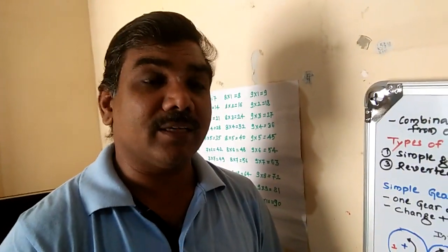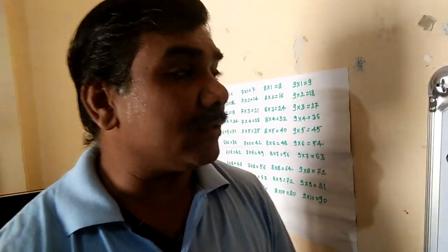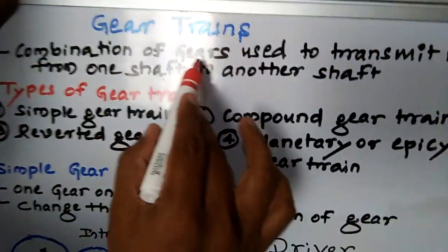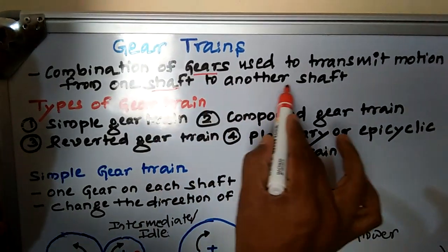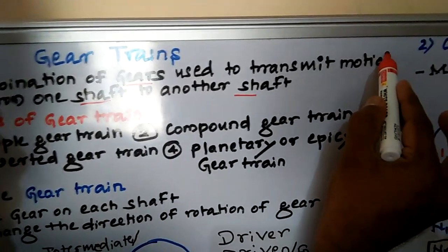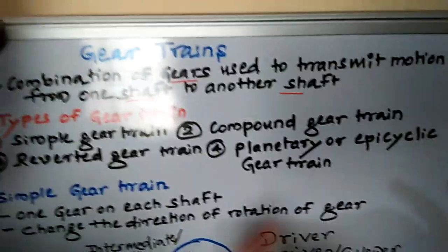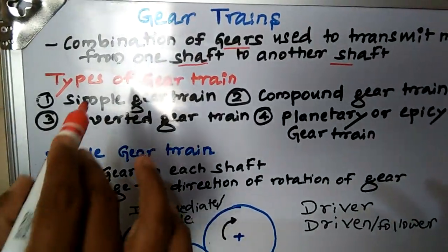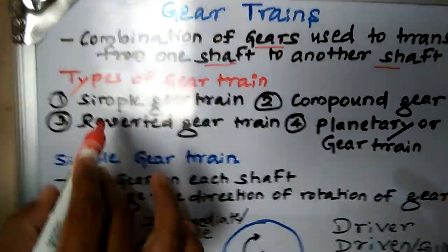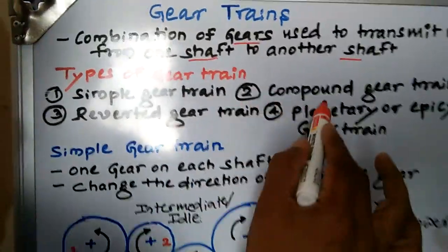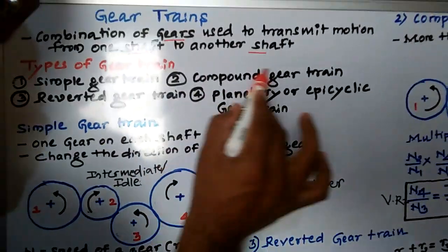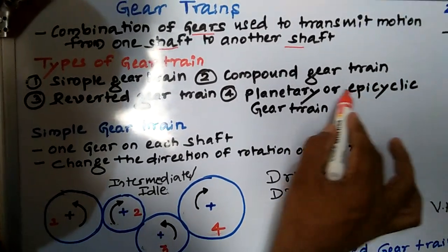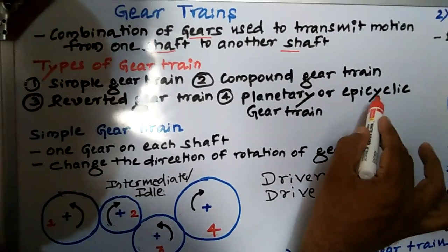Good morning. Myself, Pranallath Bhattar. This is the first video on gear trains. The purpose of the gear train — what is the meaning of gear train? It is a combination of gears used to transmit motion from one shaft to another shaft. We can transmit motion and power as well. You will find different types of gear trains: the first is a simple gear train, second is a compound gear train, third is a reverted gear train, and fourth is a planetary gear train, also called an epicyclic gear train.